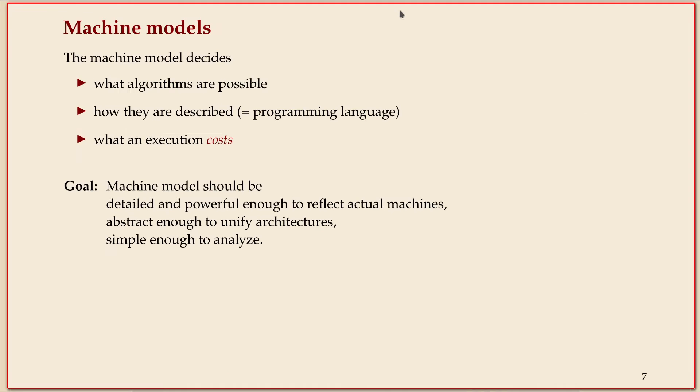Machine models are trying to put all these questions on solid ground and make sure you can answer those definitively. A machine model has to tell you what algorithms are possible, also because it specifies what programs are. This is implicit in real machines; they just run, and as long as they run, that's the time cost. For our abstractly defined machines, we will have to say what is the cost of an execution of some program.